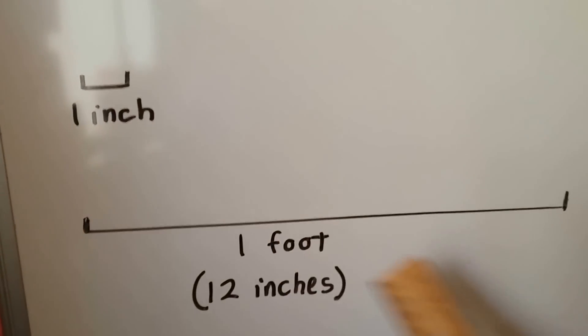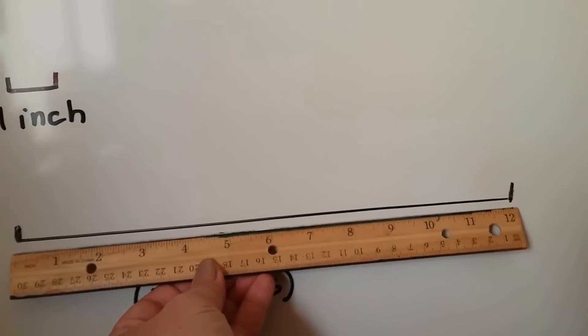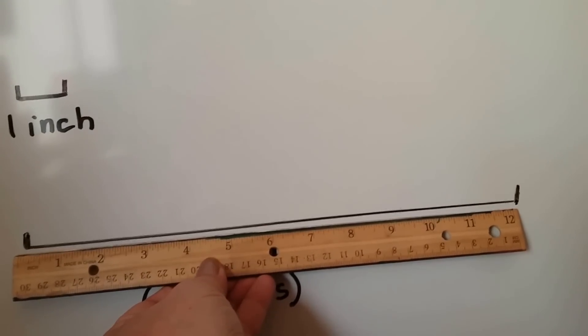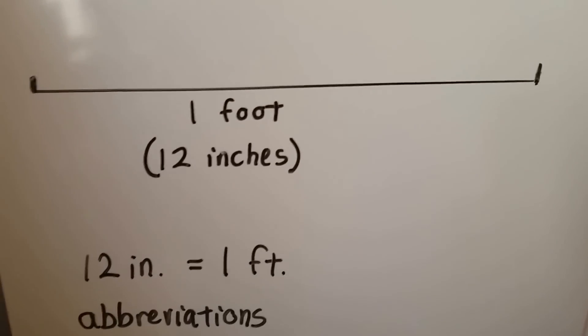This is 1 foot long. That's 12 inches. That's the length of the ruler. It's 12 inches. 12 inches equals 1 foot.